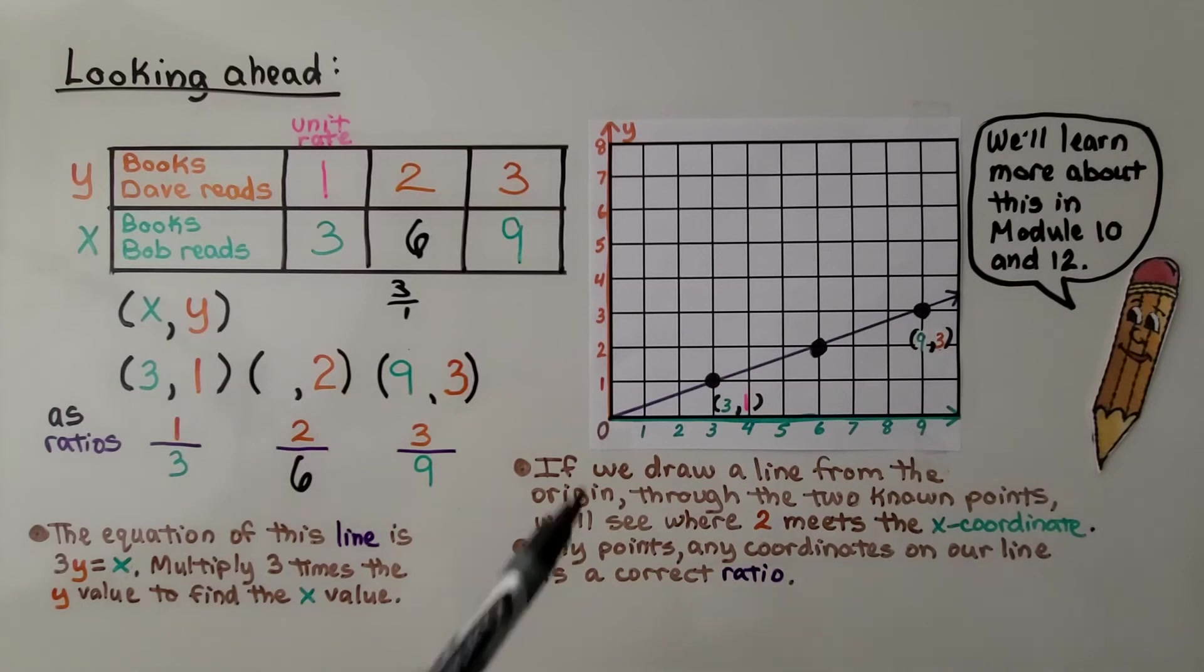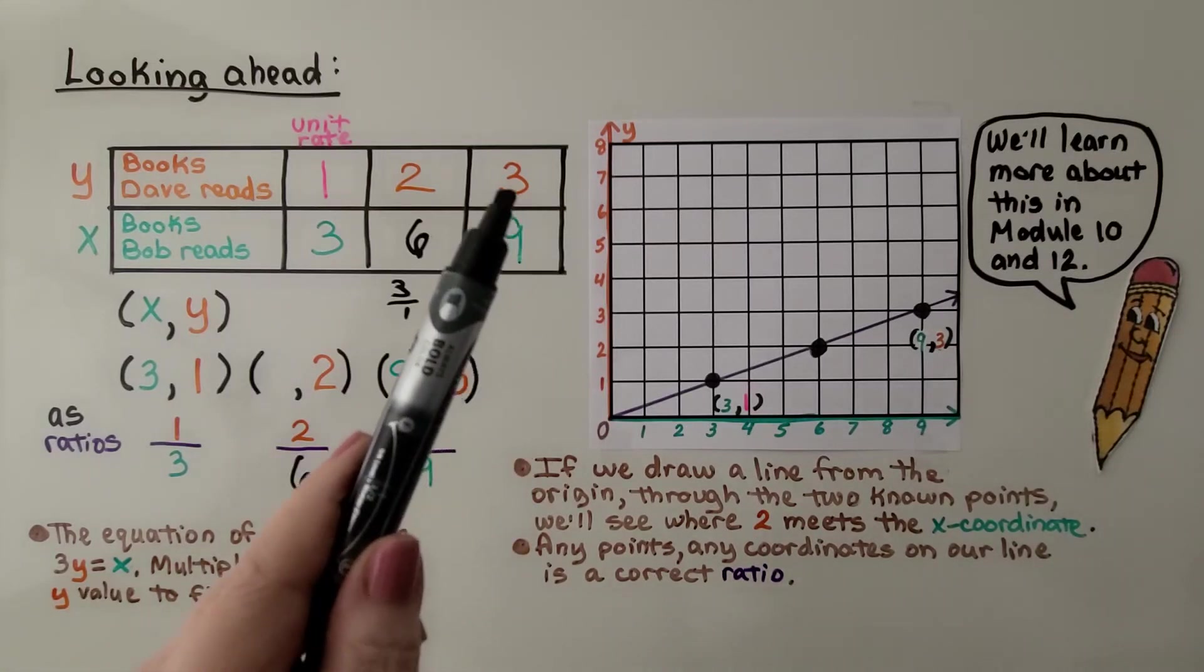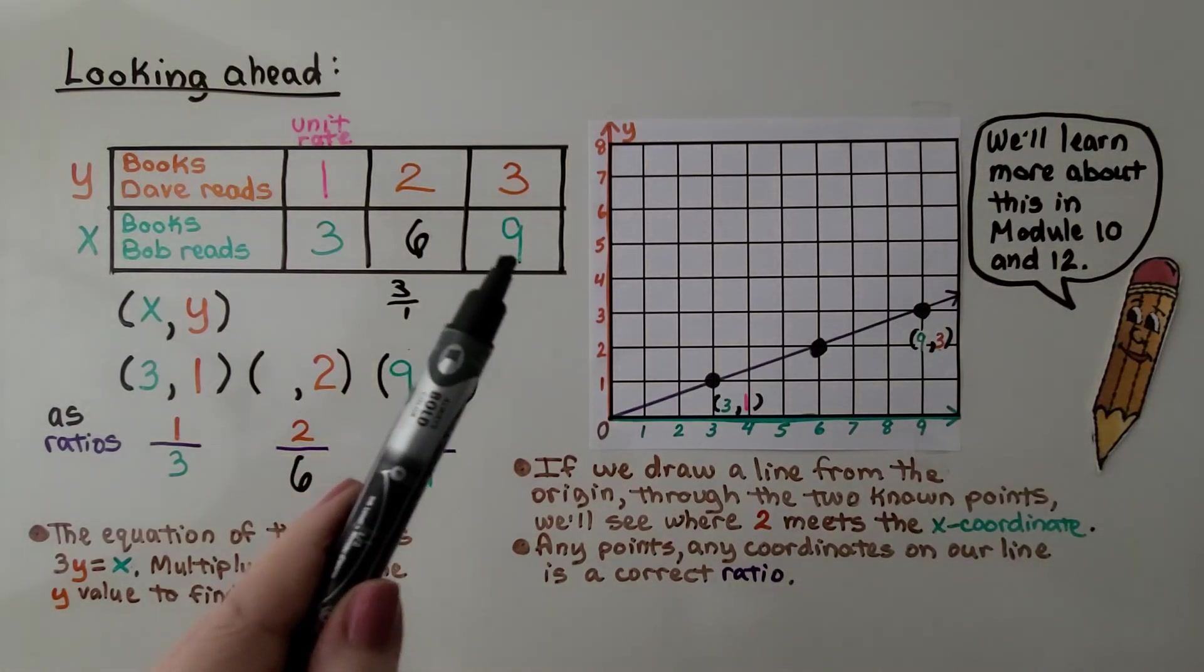And the equation of this line is 3y equals x. When the coefficient, that's the number in front of the variable, is right next to the variable, that means we're going to multiply. It's telling us we're going to multiply 3 times the y value to find x.